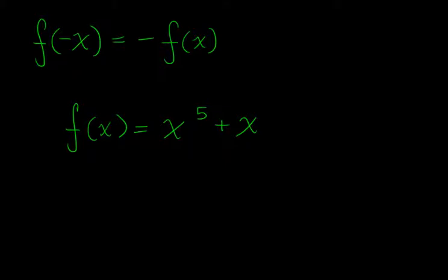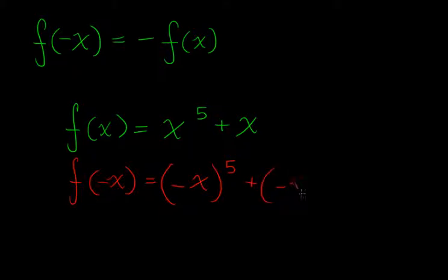So what do we do? We plug in negative x. Sorry about the lawn mowing people, they're still mowing those dang lawns. Negative x to the fifth plus negative x. And this is technically 1 to the power of 1. So these are both odd exponents, and anything to an odd exponent, if it's a negative, will come out negative. So we can rewrite this as negative x to the fifth minus x.